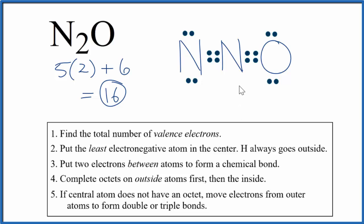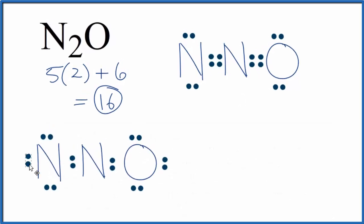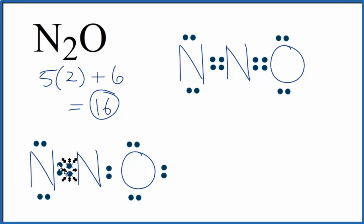But we could draw it two other ways. So we could have moved these electrons here, and then we could have moved these here. So now we have the triple bond here. This nitrogen has eight, this has eight, and the oxygen has eight. This is another valid Lewis structure.